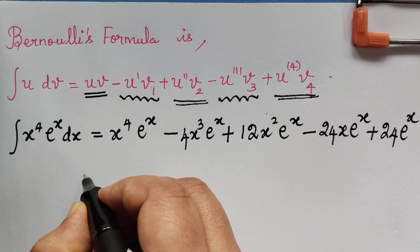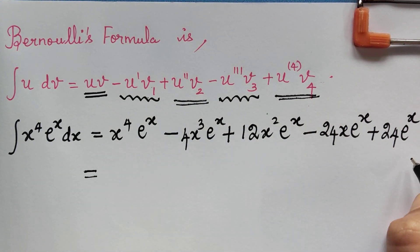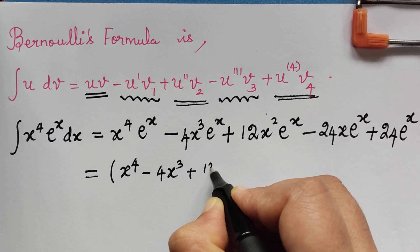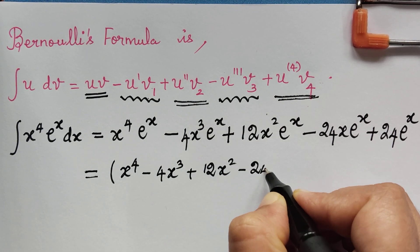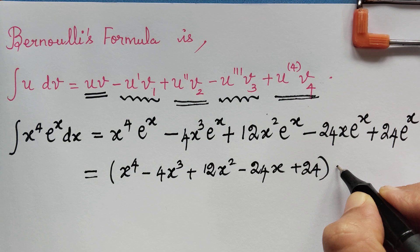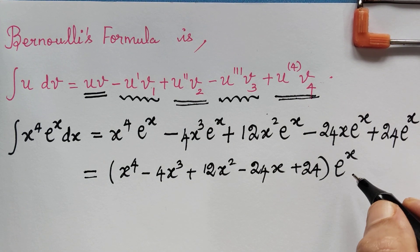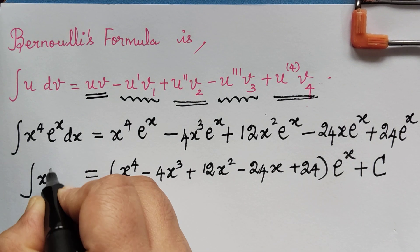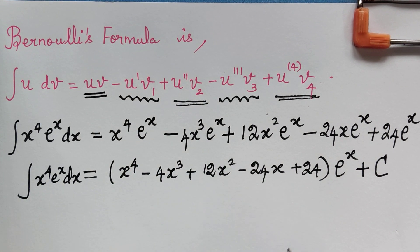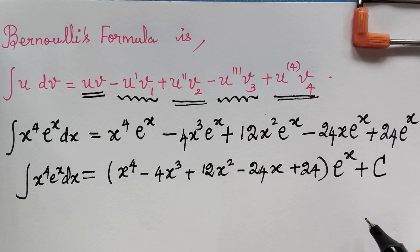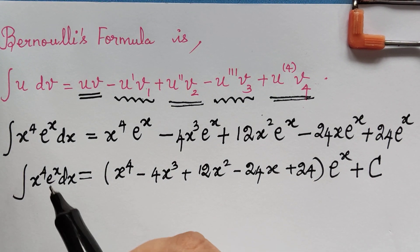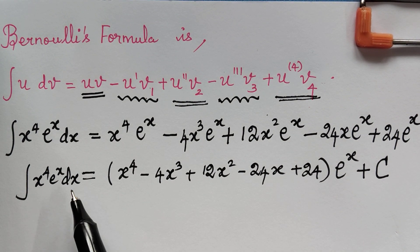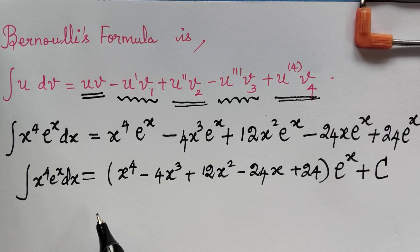Simplifying by factoring out eˣ, which is common in all terms, we get: (x⁴ − 4x³ + 12x² − 24x + 24)eˣ + C, where C is the constant of integration. Therefore, integral x⁴ eˣ dx has been evaluated using Bernoulli's formula. In our next video, we will evaluate an integral involving algebraic and trigonometric functions.